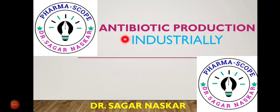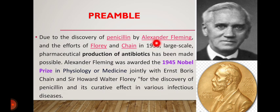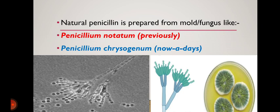Welcome friends. As you know, modern medical science is impossible without antibiotics. In this video I will talk on antibiotic production and how antibiotics are prepared industrially using different methods of fermentation. I will also discuss beta-lactam antibiotics. Here you can see the Nobel Prize awarded to Alexander Fleming, who received it in 1945 for his discovery of penicillin, along with his co-worker Florey and Chain, which opened a new era in medical science.